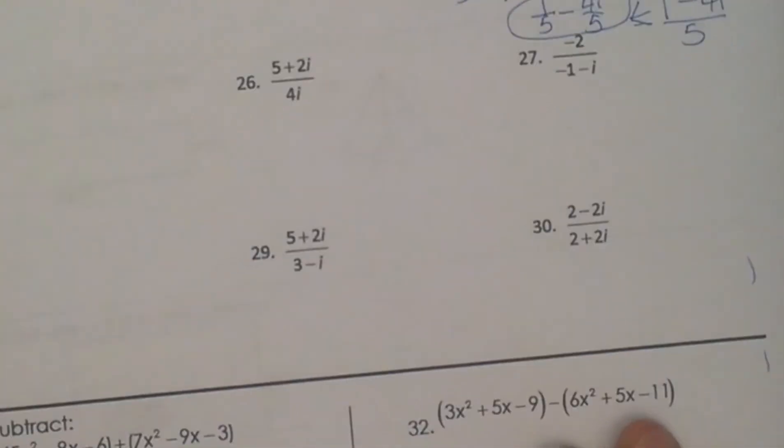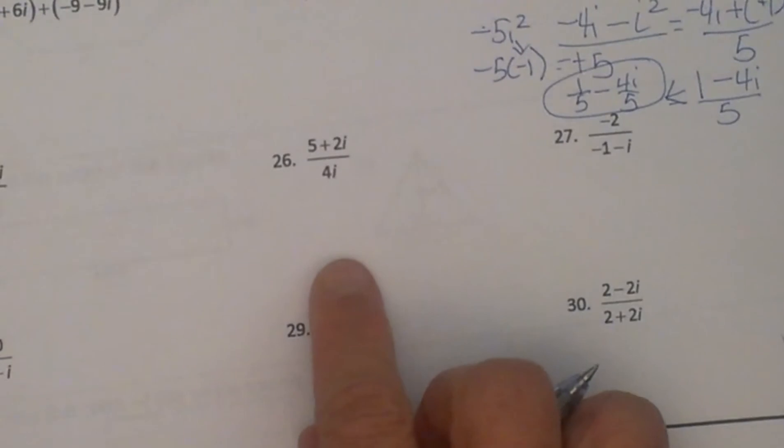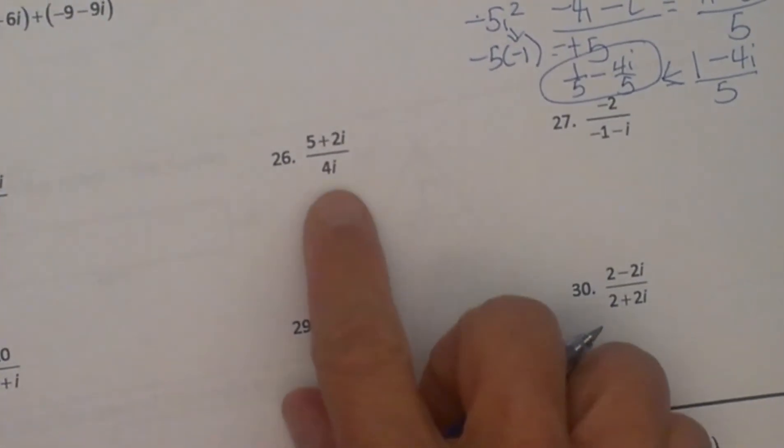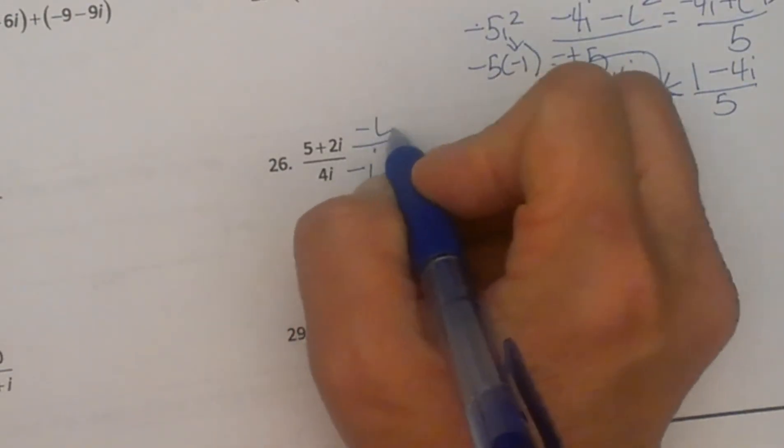Okay, let's try one more where you have to simplify. Let's just do another one that is similar to this. Here is one with a 4i in the denominator, so let's multiply this by negative i over negative i.